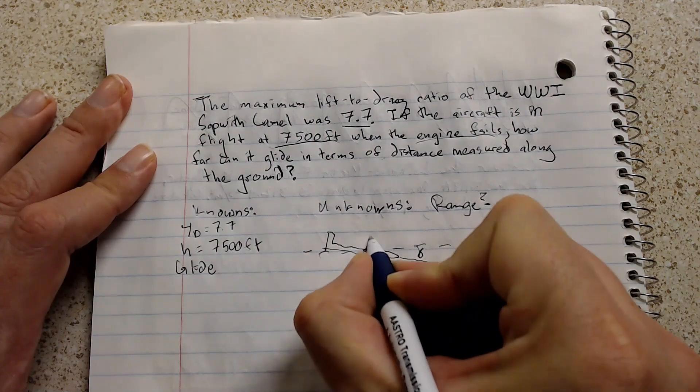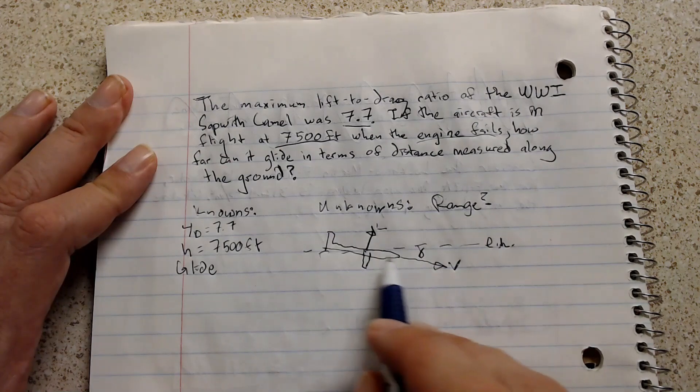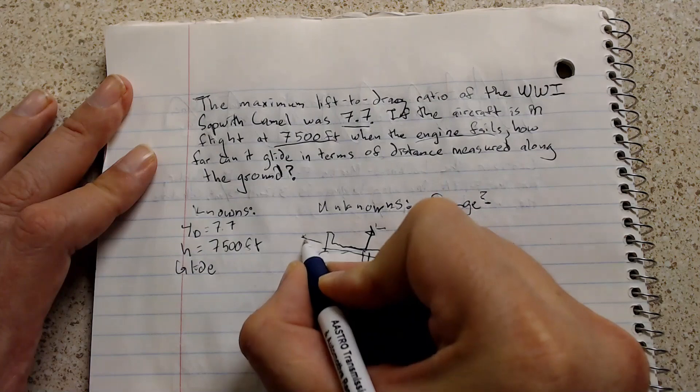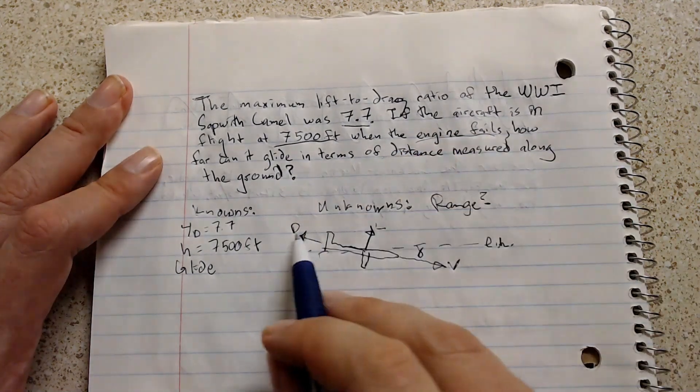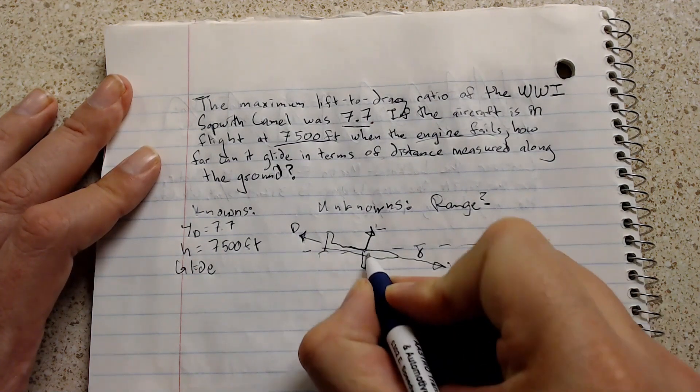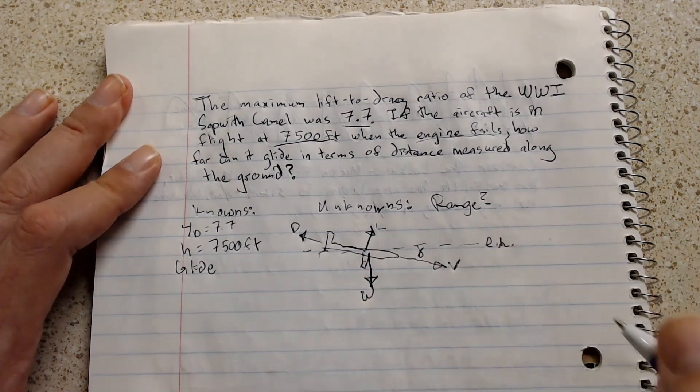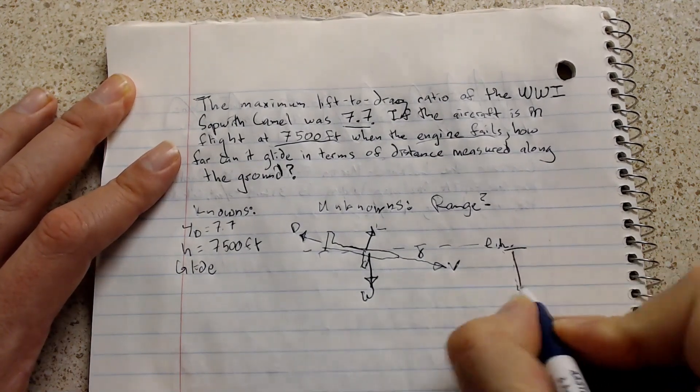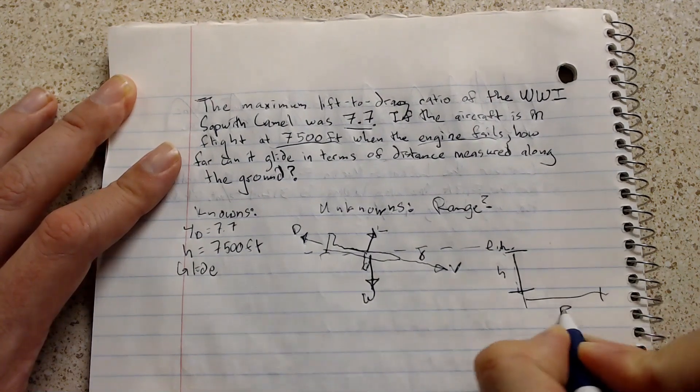It's going to have a lift value, obviously perpendicular to this velocity. It's going to have a drag, which I'm going to put back here. It's got a drag, which is acting parallel but in the opposite direction to the velocity. And then it's going to have a weight, which is acting straight down. And of course, we know the height that we're at, and we're trying to figure out the range that it's going to travel.